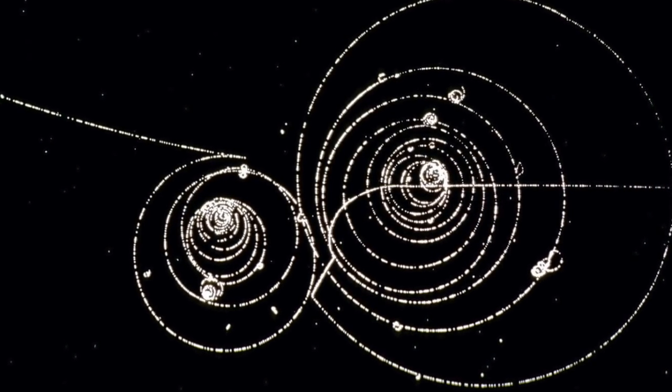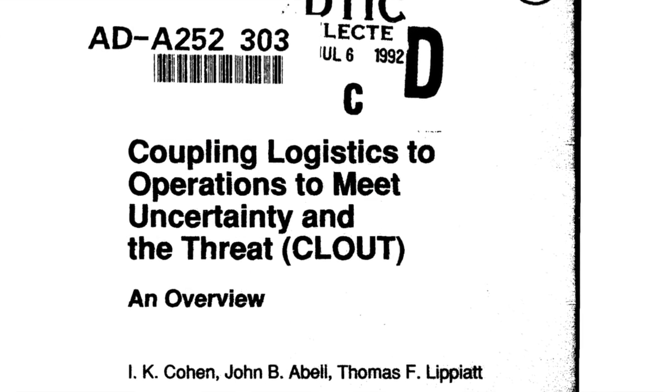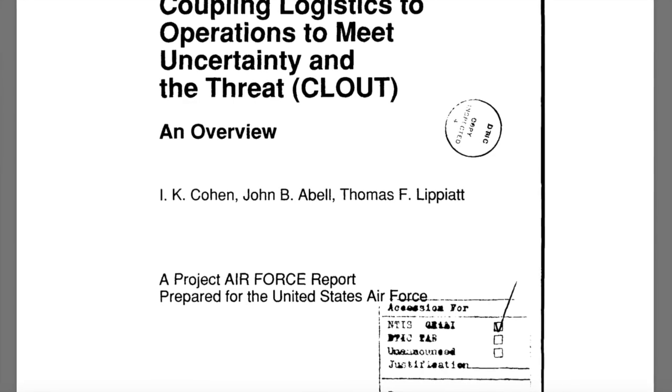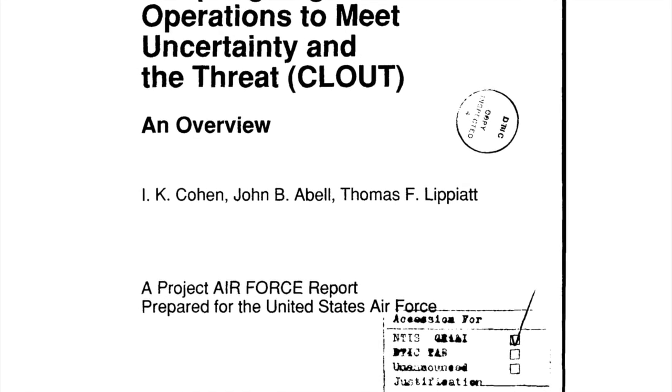There are a few different meanings, and this is a perfect example of distortion — exactly how predictive programming is utilized to harness the availability of certain elements and technologies that are out in the open but that we cannot realize. Depending on who you ask, CLOUT stands for 'Coupling Logistics to Operations to meet Uncertainty and the Threat,' according to the United States Air Force — a declassified document.